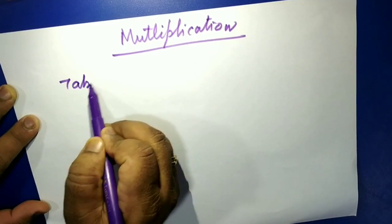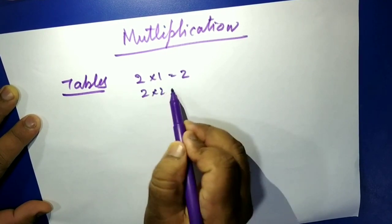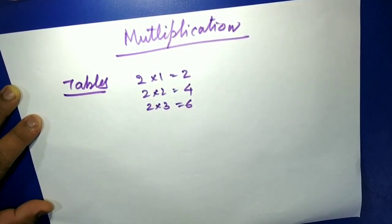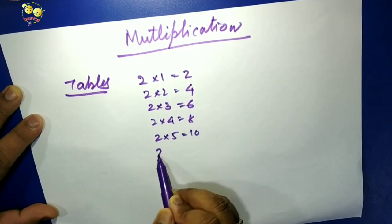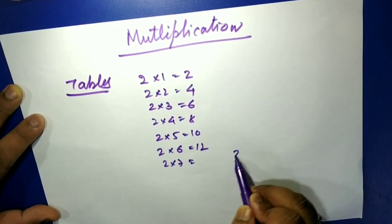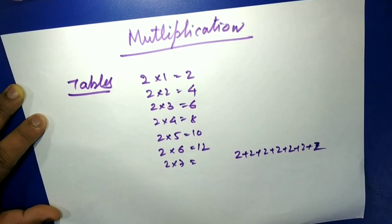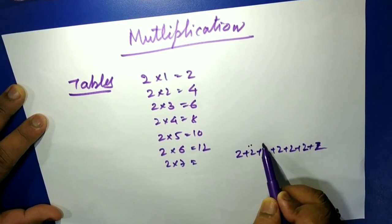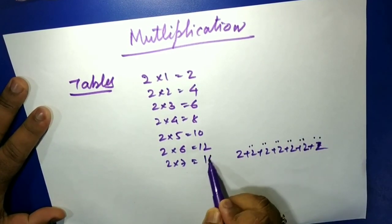To learn multiplication we need to learn tables. Let's learn the two times table. 2 ones are 2, 2 twos are 4, 2 threes are 6, 2 fours are 8, 2 fives are 10, 2 sixes are 12. For 2 sevens: count 1, 2, 3, 4, 5, 6, 7, 8, 9, 10, 11, 12, 13, 14 — so 2 sevens are 14.